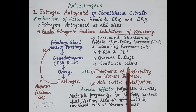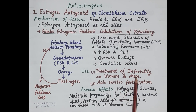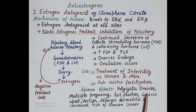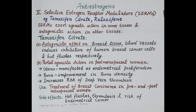Continued secretion of FSH and LH increases their blood levels, the ovaries enlarge, and ovulation is induced. Since clomiphene citrate induces ovulation, it is used in the treatment of infertility in women and men and also aids in in vitro fertilization. Adverse effects include polycystic ovaries, multiple pregnancy, hot flushes, gastric upset, vertigo, allergic dermatitis, and increased risk of ovarian cancer.